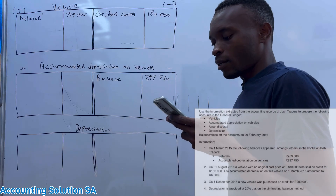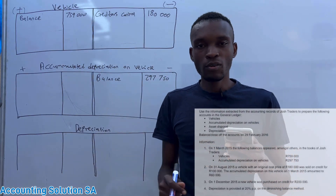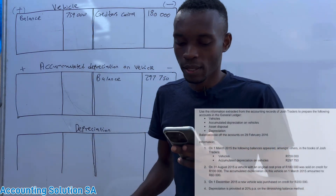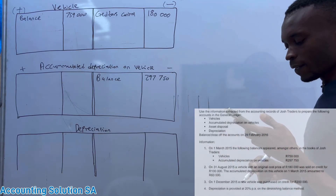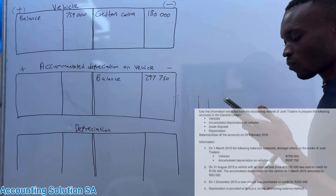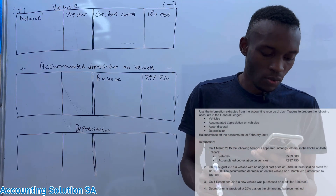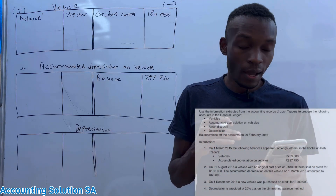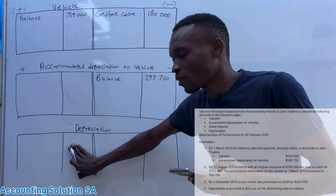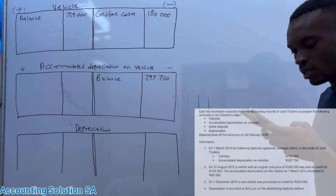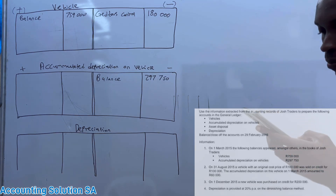The vehicle was sold for 100,000. That amount we are not going to record in the vehicle account — it's part of the assets disposal account, which you will check after this video. The accumulated depreciation on this vehicle on 1 March amounted to 60,000. That 60,000 will help us calculate the depreciation for this assets disposal. Then on 1 December 2015, a new vehicle was purchased on credit for 200,000.